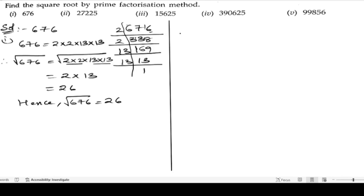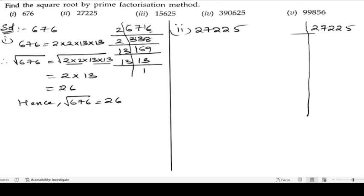Now let us do the second bit. The second bit is 27225. We will take out its factors. To check which table it comes in: 2 plus 7 is 9, 9 plus 2 is 11, 11 plus 2 is 13, 13 plus 5 is 18. Since 18 is divisible by 3, it comes in the 3 table: 3 into 9075, then 3 into 3025.